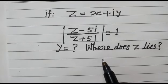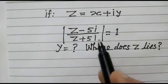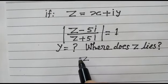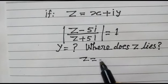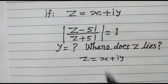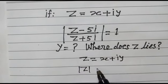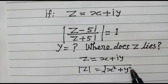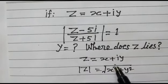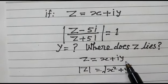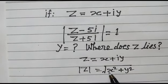Before starting this problem, we have to go over the fundamentals. As z is equal to x plus iy, the modulus of z is equal to the square root of x squared plus y squared — the square of the real number and square of the imaginary number under the root.